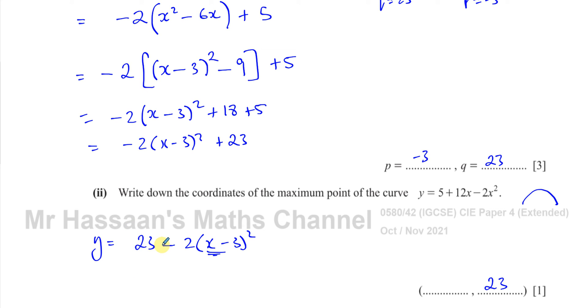And, you know, when will it reach its highest value? When you take away nothing from it. Okay, when it's 23 - 0. So what causes this expression to become 0? Well, when the x value is 3.